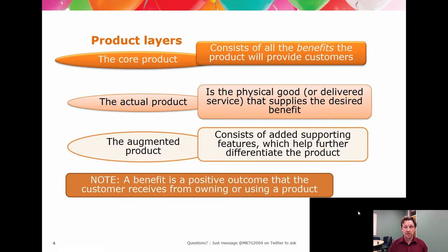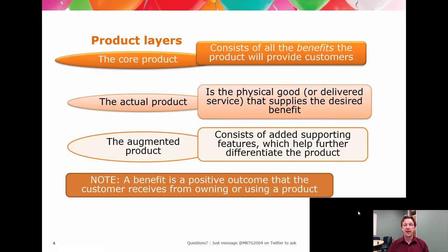The benefits aren't the features. The benefits are what the customer gets from ownership or use of a product. A core product is usually pitched in terms of solving a problem — it can be one of the Maslow hierarchy elements, satisfaction, happiness. What it can't be is one of the elements of the actual product. The core product is not a button, not the amount of RAM, not the flavor. Those are components of the actual product — the physical good, performance of a service, or the thought processes around an idea.